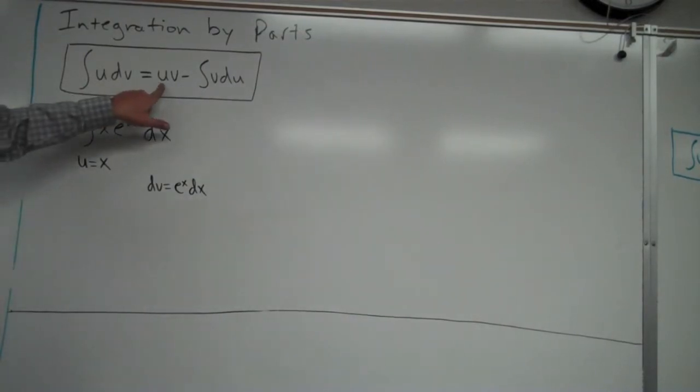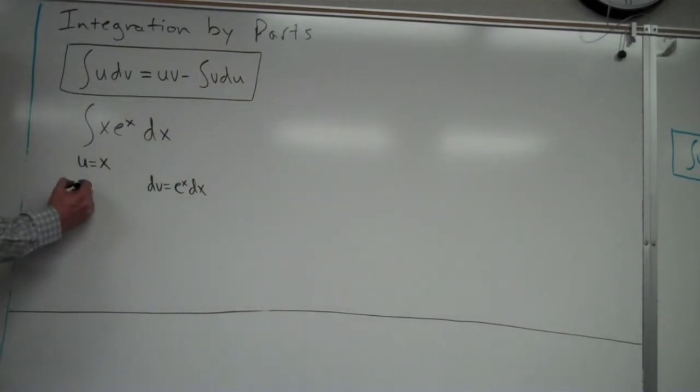So, the next thing I want to do, I want to fill in this stuff here. So in order to do that, I need to figure out what is v, what is du. So in this case, du, the derivative of x is just one. But I'm going to write it as dx. Kind of like when we do u sub. That's how we write it out.